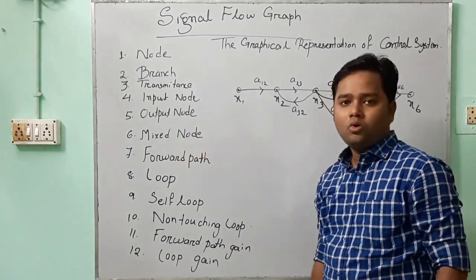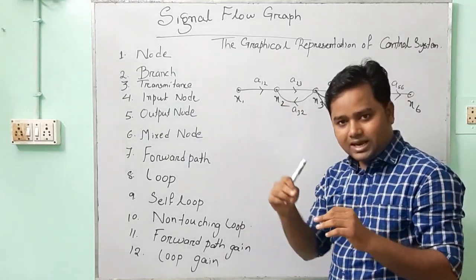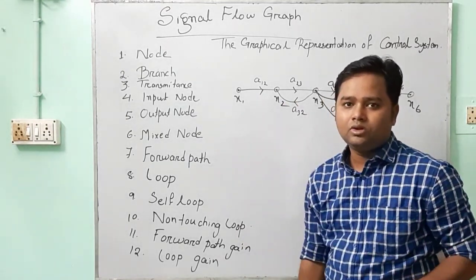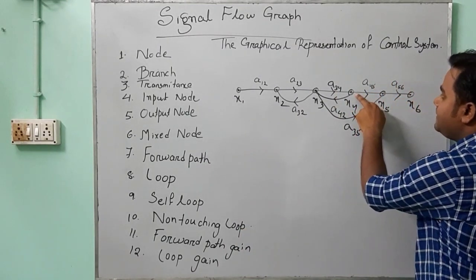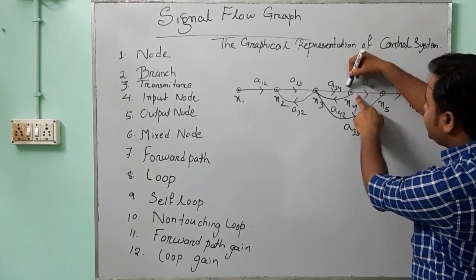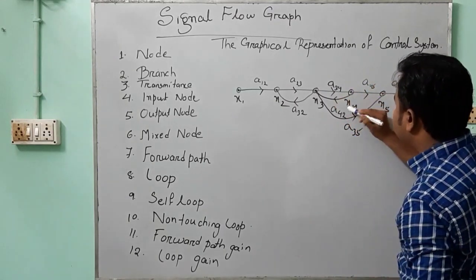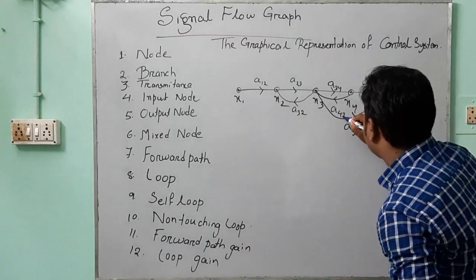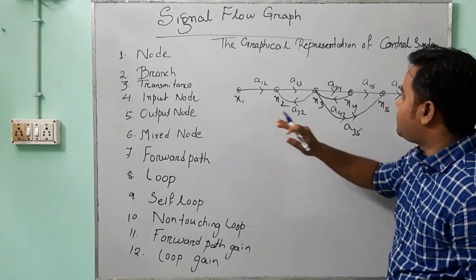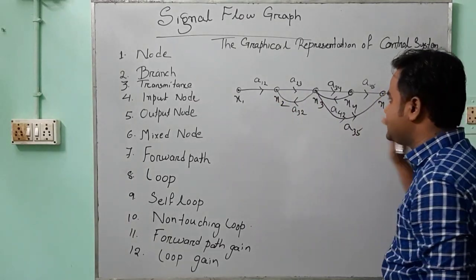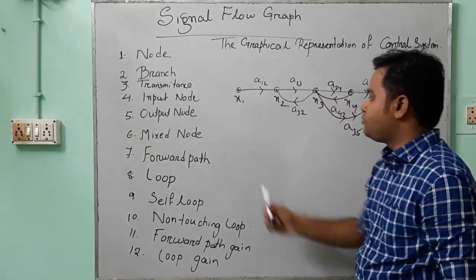Next, we go for the mixed node. What is the mixed node? Mixed node means the node to which some input signal is present as well as some output signal is going through. For example, at point X4, the input signal coming in is A34, the output going out is A45, and also some output A42 is given here. So X4 is a mixed point. Similarly, excluding X1 and X6, all nodes — X2, X3, X4, and X5 — are mixed nodes.